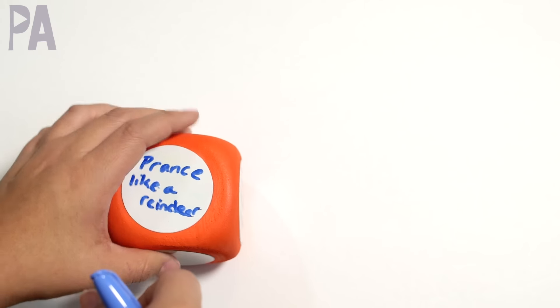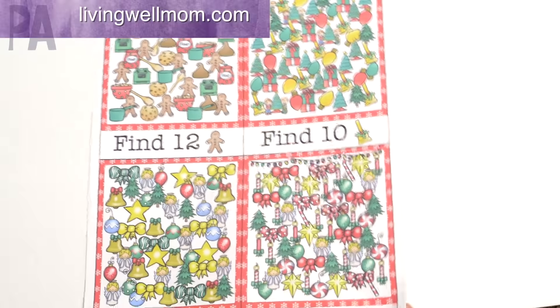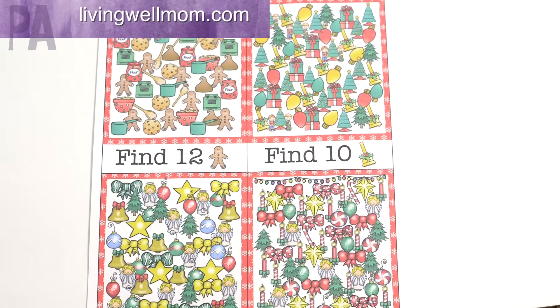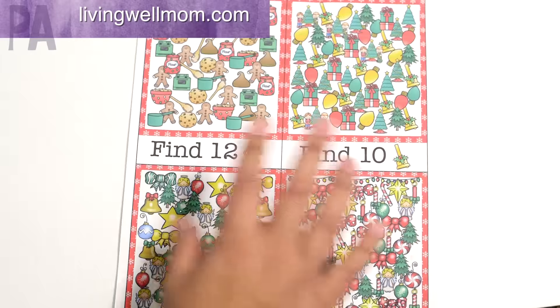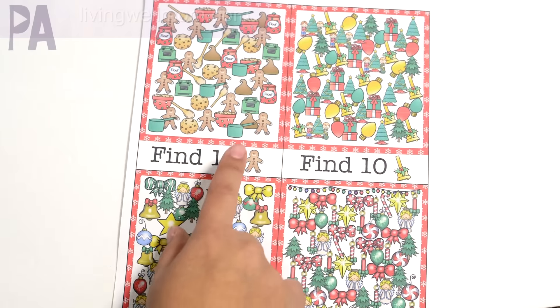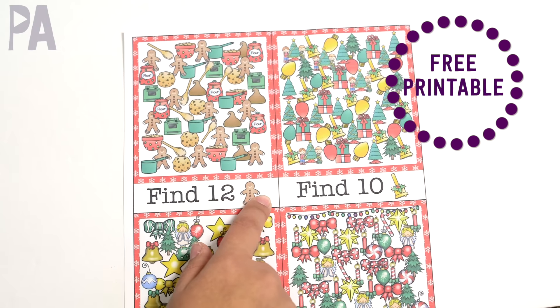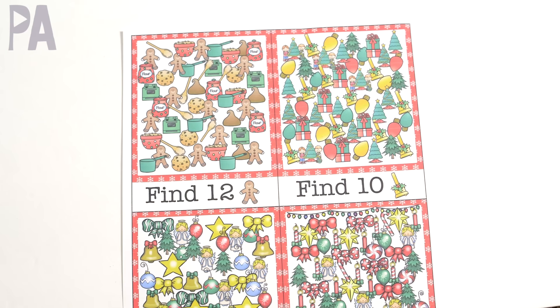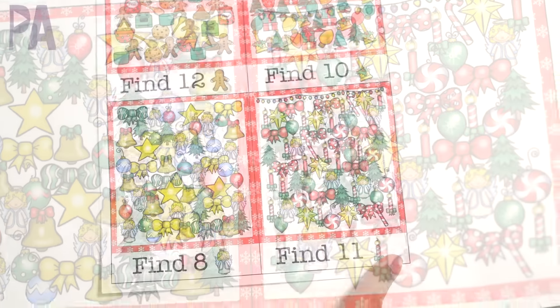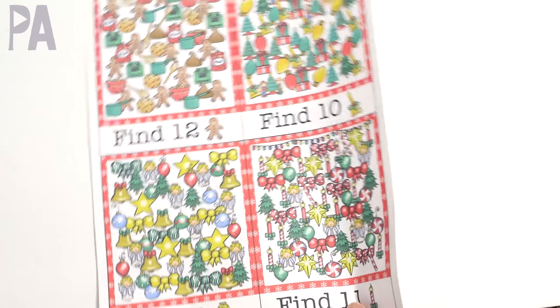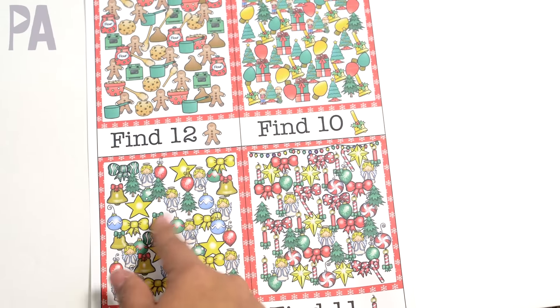I spies are a lot of fun, particularly this one. This is what it looks like when you print it out. I'll put the link down below. It's a free printable, so you're going to love that. Print it out, cut it out, laminate it, and you're going to have a really great on-the-go activity. There are four different cards on here. This one says find 12 gingerbreads, this one is find the 10 bells, this one is find the 8 angels, and this one is the 11 candles. Really simple, easy activity. Put this in the car on your way to grandma's and give them a dry erase marker, and they can circle all of them on their own.